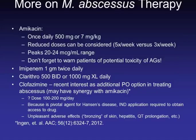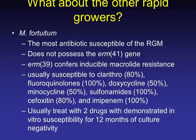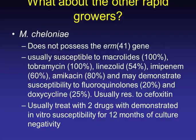More on abscessus therapy: amikacin doses as listed; always warn patients of potential aminoglycoside toxicity — reversible ototoxicity and irreversible vestibular toxicity. Imipenem given at 1g twice daily. There has been recent interest in clofazimine as an additional oral option due to possible synergy with amikacin, but an IND application with the FDA is required to obtain it. Clofazimine also has unpleasant adverse effects including bronzing of the skin, hepatitis, and QT prolongation. Fortuitum tends to be very susceptible and can be treated quite easily. Chelonii also treated with two drugs for 12 months — not the challenge that abscessus presents.